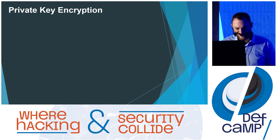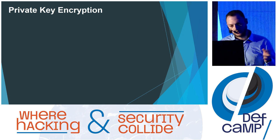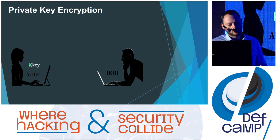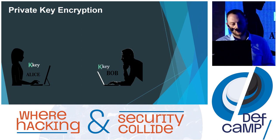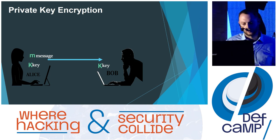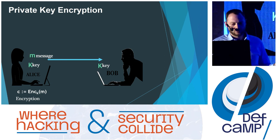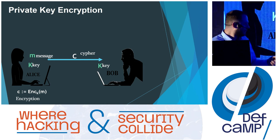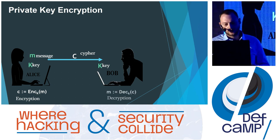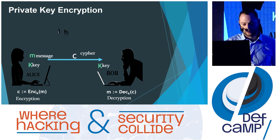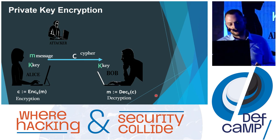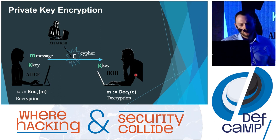Let us begin with the basic concepts of cryptography. In cryptography, as always, we have our two heroes, Alice and Bob. First of all, they have to generate the key and share it — Alice generates it and sends the key to Bob. We are talking about symmetric cryptography, or private key encryption. Alice takes a message, encrypts it using the key and the encryption algorithm, and sends the cipher to Bob. Bob received the cipher and, as he has the key, he can decrypt it.